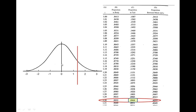If we wanted to look at the proportion from our mean, which is a z-score of zero, to our value, we shade that area and look at that column. That proportion is .4032, so approximately 40%.